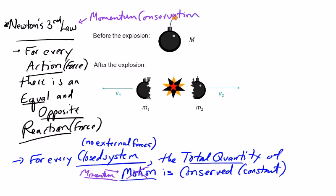The best way to look at this is actually with an explosion. I have this toy bomb here — it has a certain mass and it's just sitting here at rest, so it initially has no velocity. As it counts down and eventually explodes, we have two pieces of this bomb moving off from each other.